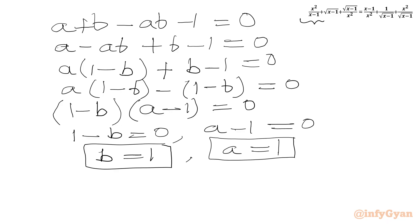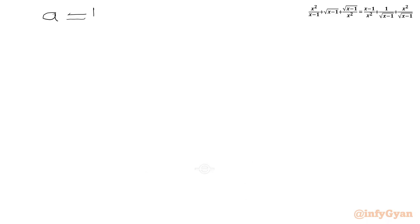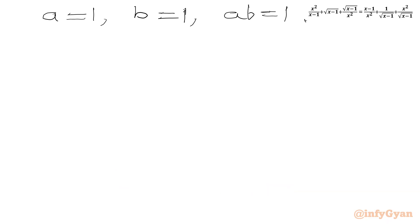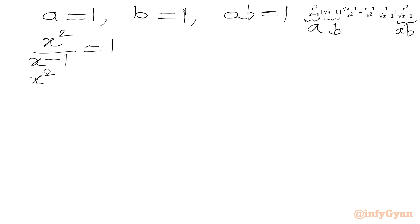Recall that a = x²/(x−1), b = √(x−1), and ab = x²/√(x−1). So we have three cases to solve: a = 1, b = 1, and ab = 1. Let us begin with a = 1.